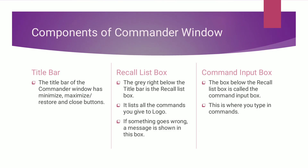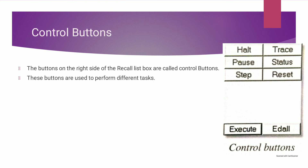Components of the commander window in detail. The title bar of the commander window has minimize, maximize, restore, and close buttons. The recall list box is the area just below the title bar — it lists all the commands you give to Logo, and if something goes wrong a message is shown in this box. The command input box is below the recall list box — this is where you type your commands. The control buttons are on the right side of the recall list box and are used to perform different tasks.